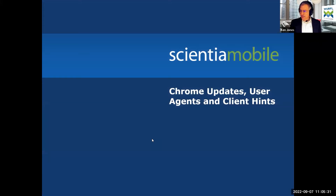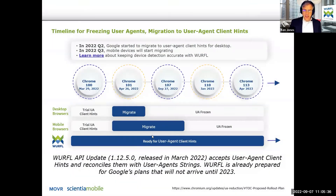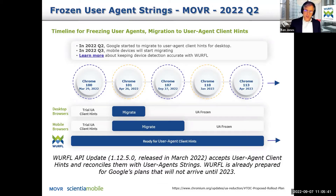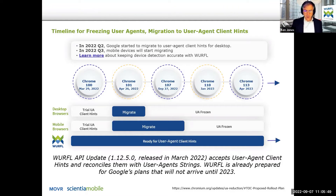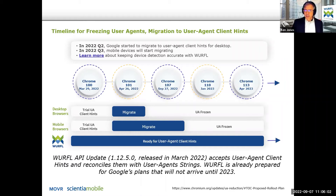Let's move on to Chrome updates and the trends we're seeing in the process that Google has set out for freezing user agents and transitioning to what they call user agent client hints. We'll go into a lot of detail here. There are blogs on our website you can read, with links to a full discussion of the process of freezing user agents and transitioning to client hints.